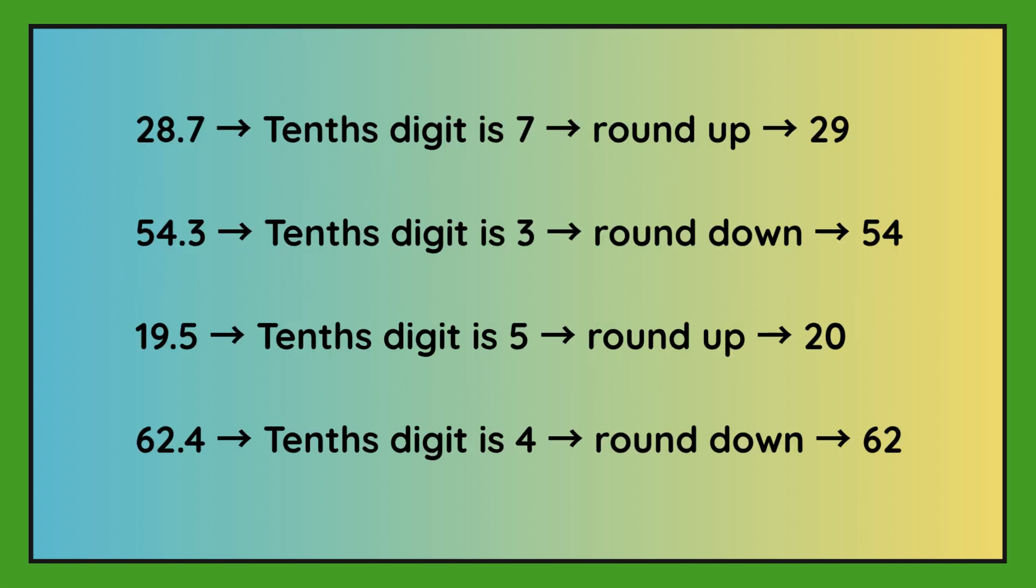Here are some examples. So 28.7. The tenths digit is 7, so we're rounding up to 29. Remember, high five, round up.